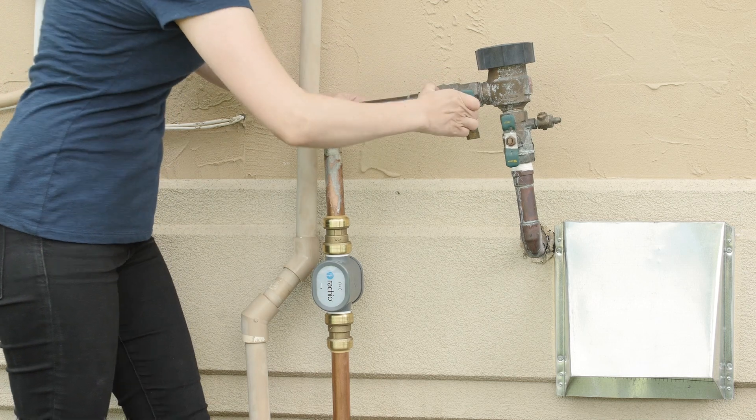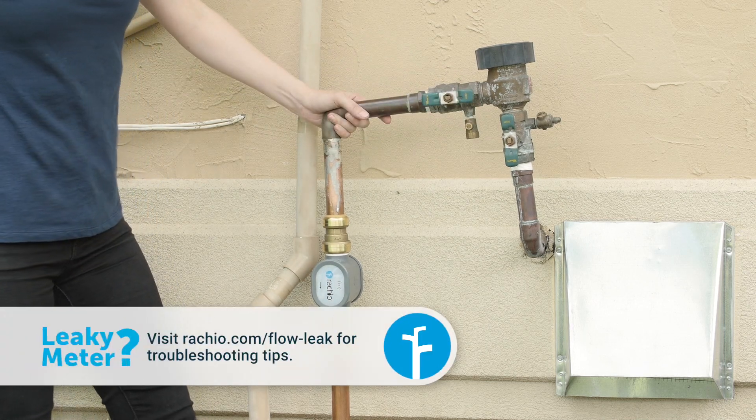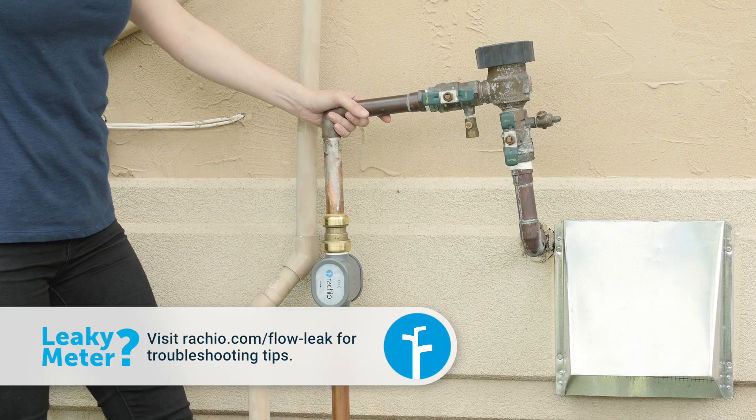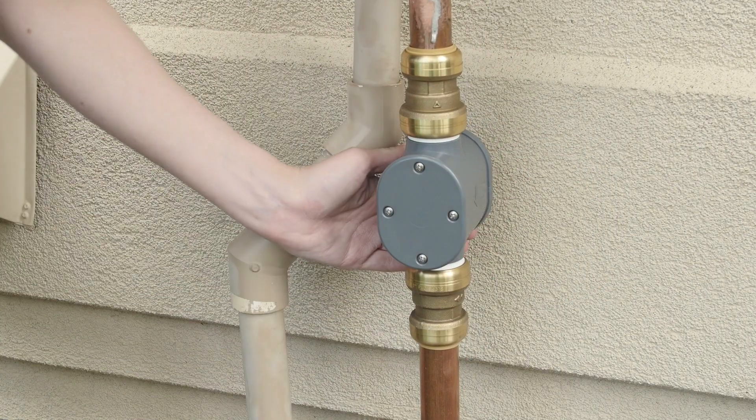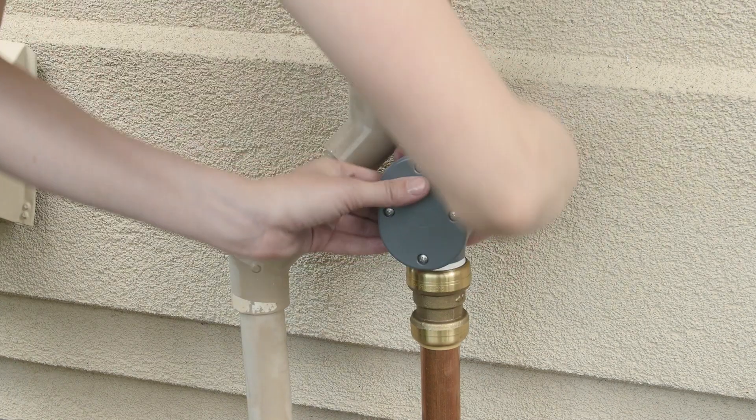You're ready to turn on the water. If you see a drip, make sure the fittings have been pressed all the way to the insertion marks. If you used Rachio recommended fittings, the meter can swivel in any direction, providing easy access to the battery compartment.